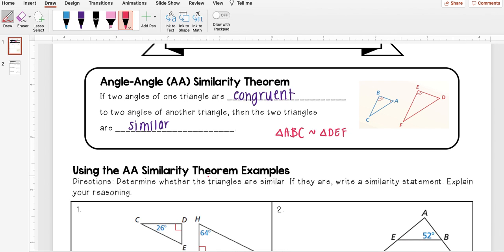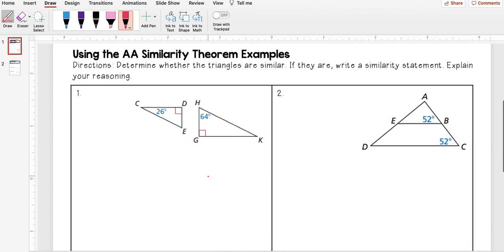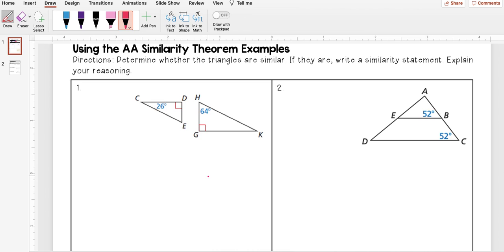So let's go through some examples. For this first set of examples, I want to determine whether the triangles are similar. If they are, I'm going to write a similarity statement. Again, you really need to be careful with the order of your letters, and then explain your reasoning.